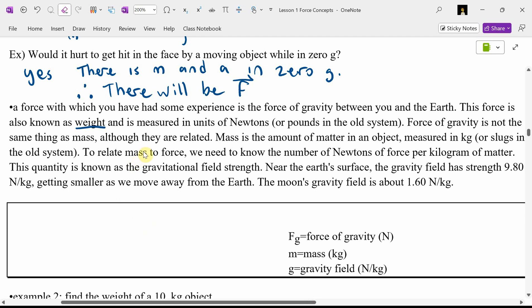This is where I always sigh and say, no one bothered reading ahead in the paragraph. Mass is the amount of matter in an object, measured in kilograms or slugs in the old system. To relate mass to force, we need to know the number of newtons of force per kilogram of matter. And this is known as, here's your new term that I'm going to use often this year, gravitational field strength.